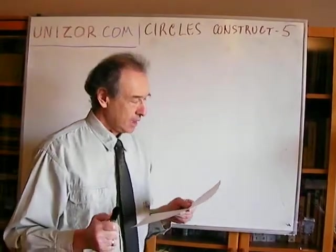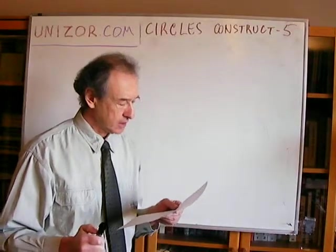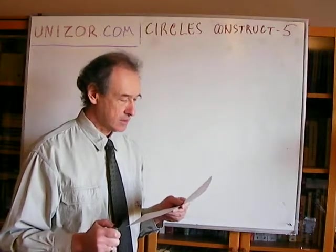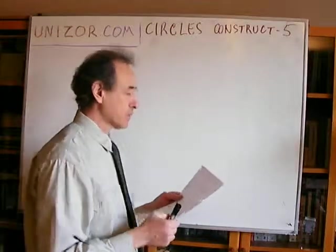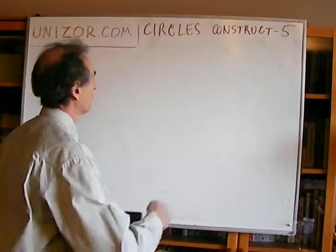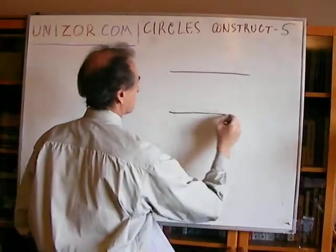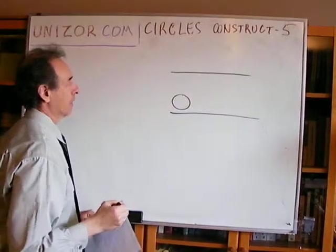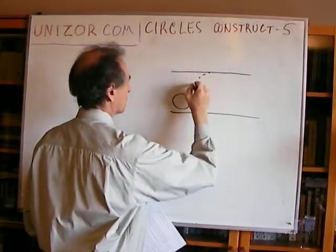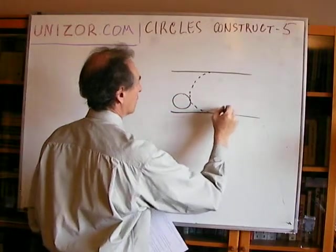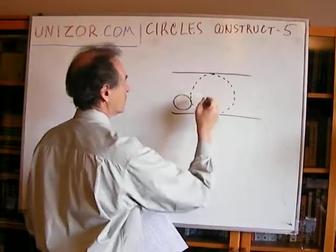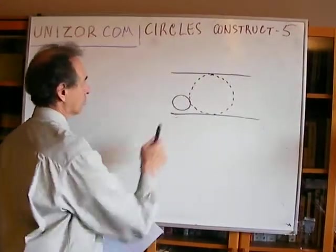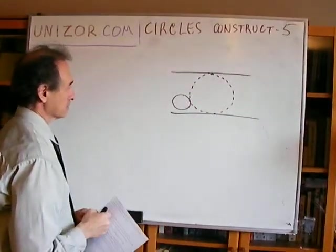First: construct a circle tangential to two given parallel lines and to another given circle between them. So you have two parallel lines and a circle in between them, and you have to construct a circle which is tangential to these parallel lines and to this particular given circle.